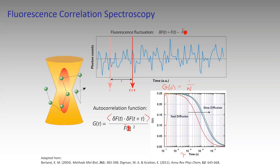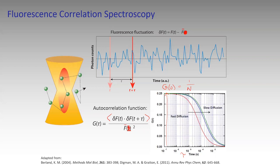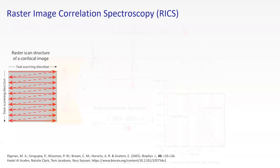So that's fluorescence correlation spectroscopy. What we're actually doing is raster image correlation spectroscopy, which takes advantage of the fact that the confocal microscope images pixel by pixel. There's a pixel dwell time where you image one pixel, then a certain time later the next pixel, building up a whole line. At the end of the line, the laser slows down, stops, retraces to the next line, and then you start imaging again with certain pixel dwell times.